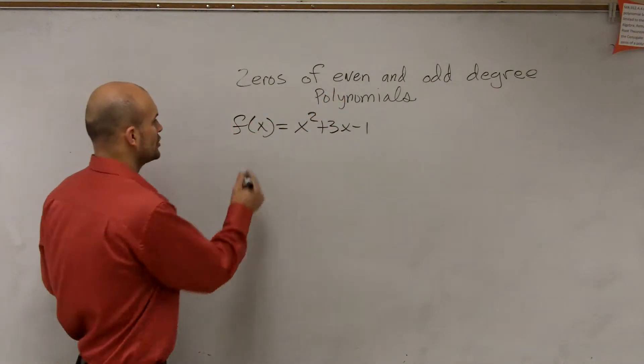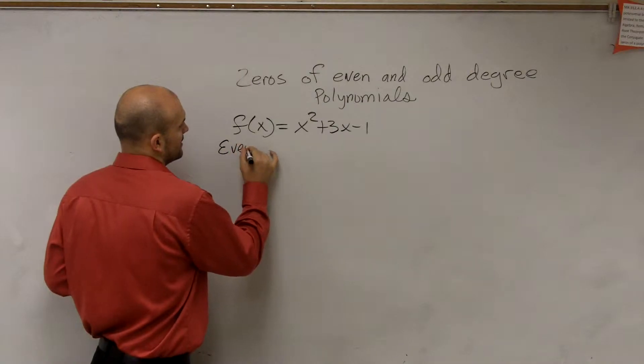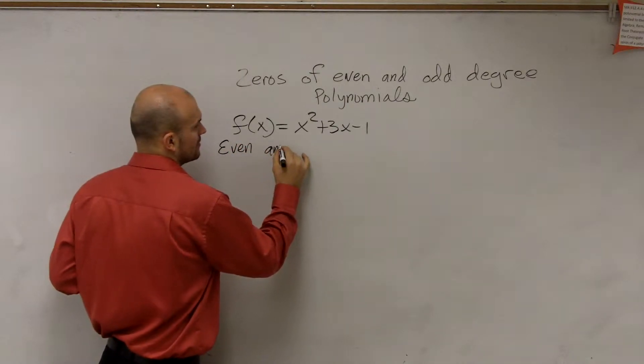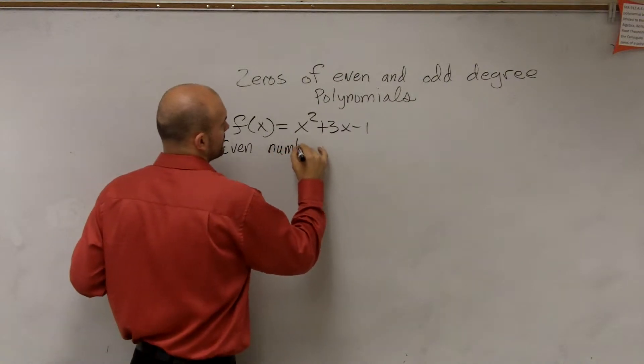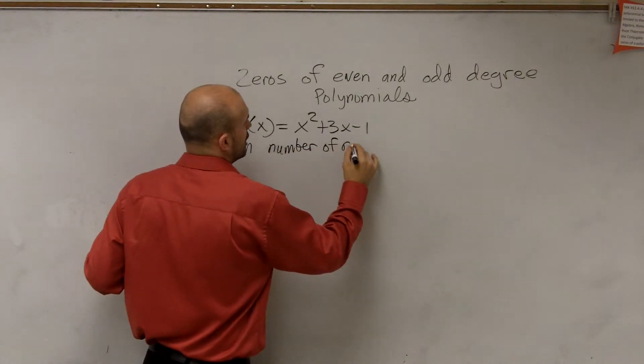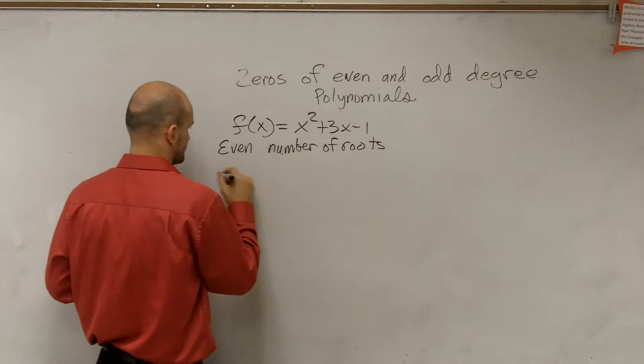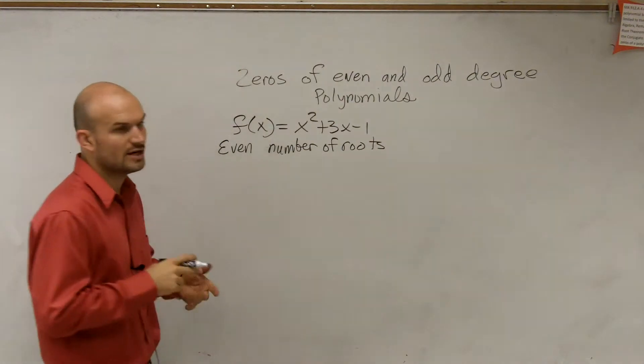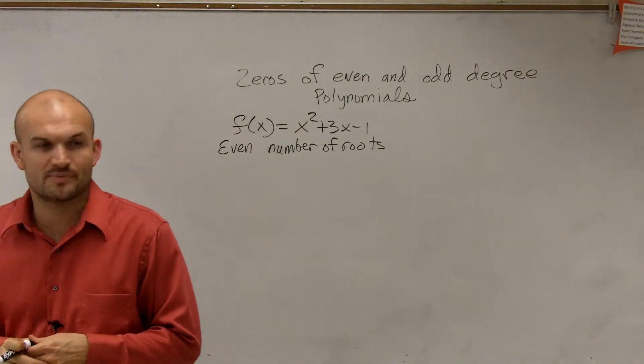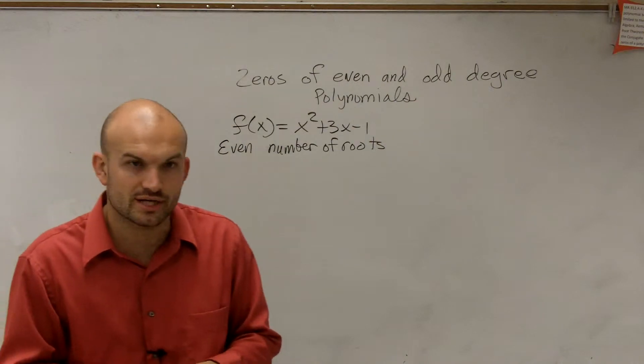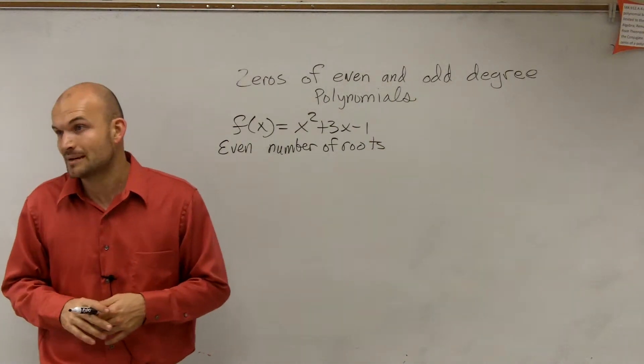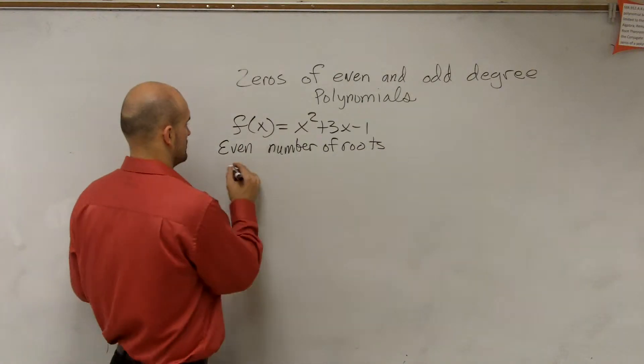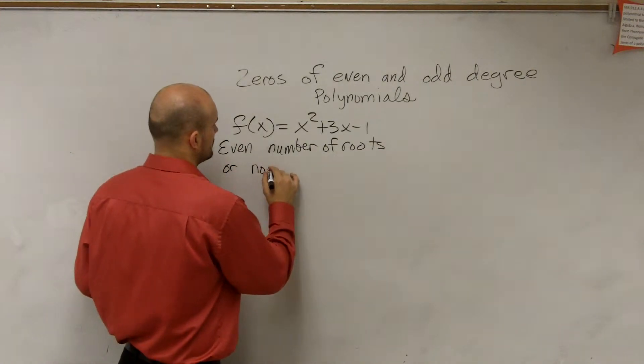When you have an even function, you're going to have an even number of roots. Even number of roots or zeros, depending if we're dealing with an equation or a function. But you're either going to have an even number of roots, zeros, or x-intercepts, or none at all.